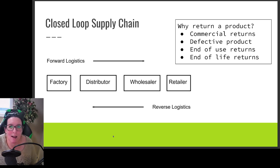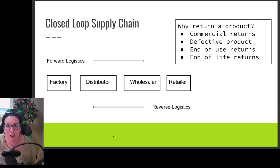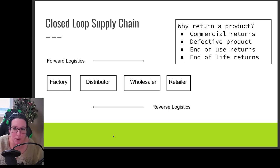But we need to recognize that we also have products being returned to the retailer — and then what happens to those products? Maybe it's simply a dress you bought that doesn't look good on you. It's not your style, it's not your color, there's nothing wrong with it. But you return it to the store — and then what does the store do with it? Does it stay there or does it move backwards through the supply chain to the wholesaler or distributor?